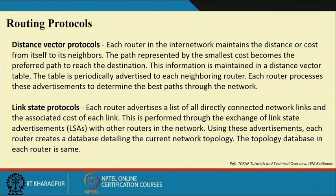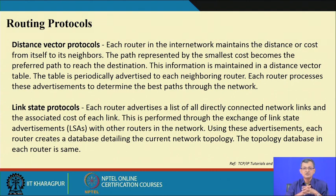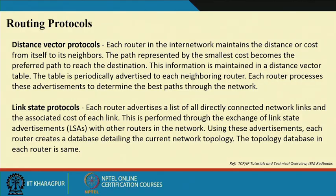In distance vector, each router maintains a distance or cost from itself to its neighbors — it is more localized. A router only maintains and shares information about its neighbors along with the cost, sometimes called the distance. The path with the smallest cost becomes the preferred path to reach the destination. This information is maintained in a distance vector table, which is periodically advertised to each neighbor, and each router processes this advertisement to determine the best path.